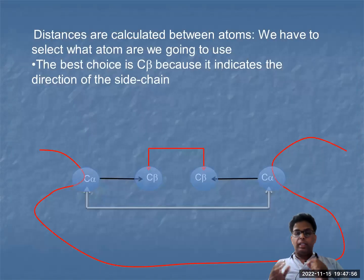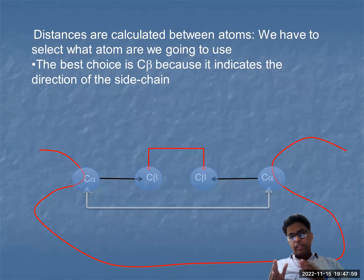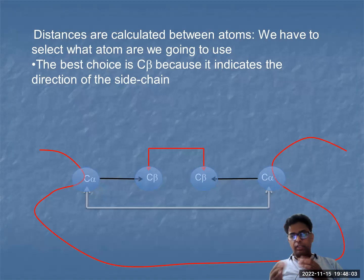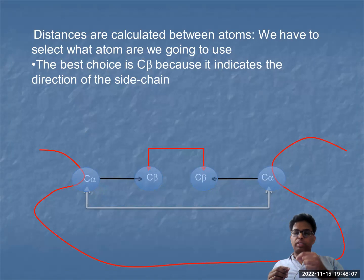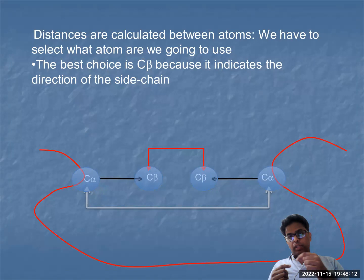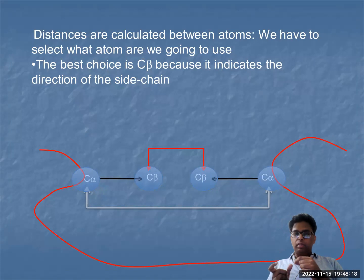Keep in mind that the better choice for measuring is the beta carbon, not the alpha carbon. The beta carbon starts from the secondary side chain. Using the beta carbon indicates the side chain and has less possibility to vary, less fluctuation. So it is better to use the beta carbon.